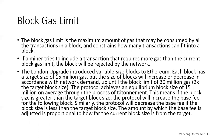The London upgrade introduced these variable size blocks. Each block has a target size of 15 million gas, but it can increase up to 30 million gas, which is double the target block size. We reach an equilibrium block size of 15 million by increasing the base fee if the current block size is higher, and decreasing the base fee if the current block size is lower than the 15 million target.